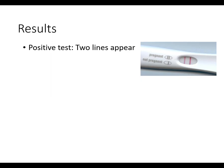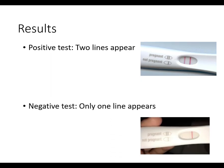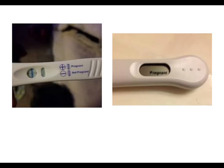So a positive test gives two lines; a negative test gives just the one line showing the test is working but the woman is not pregnant. Some companies have done clever things with these tests - for example making a cross shape, or converting results into a digital symbol. They all work in exactly the same way.